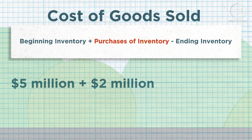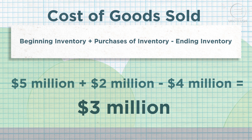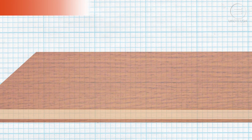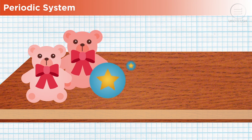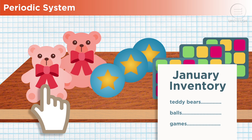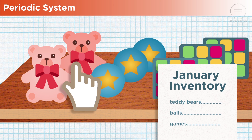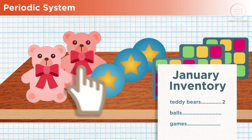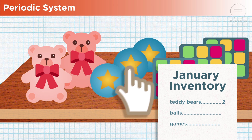If a company starts with five million dollars in inventory, makes two million dollars in purchases, and ends with four million dollars in inventory, the company's cost of goods sold would be three million dollars.